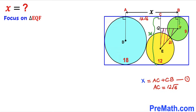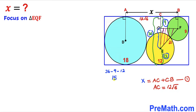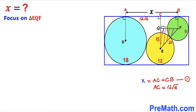The radius of the green circle is 9, so this distance is 9, and the radius of the yellow circle is 12, so distance QE equals 36 minus 9 minus 12, which gives us 15. Therefore, side QE turns out to be 15 units.